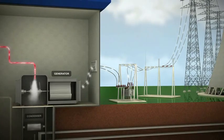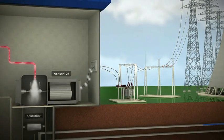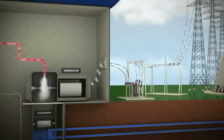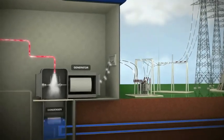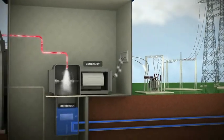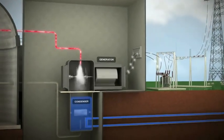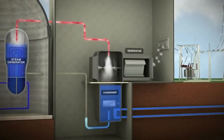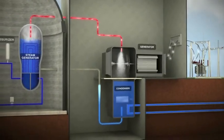After the steam is used in the turbines, it is drawn into a condenser, where it is cooled and condensed back into water and pumped back to the steam generator to be heated and reused.